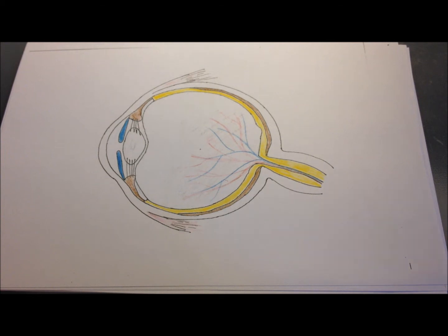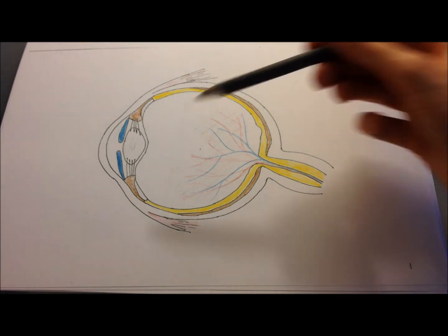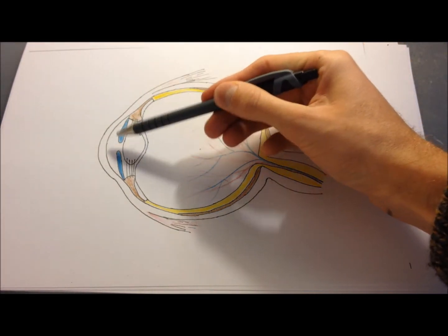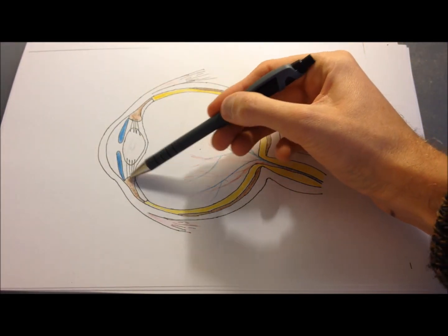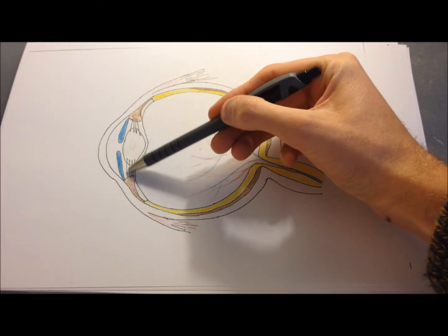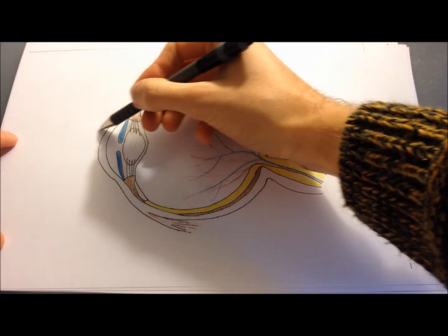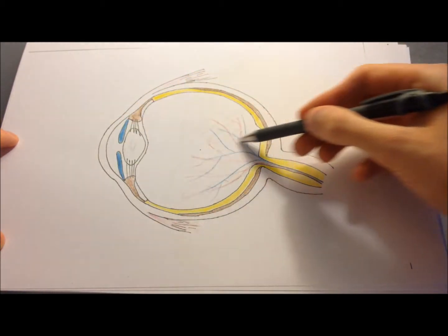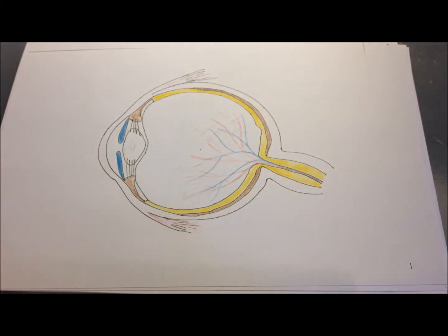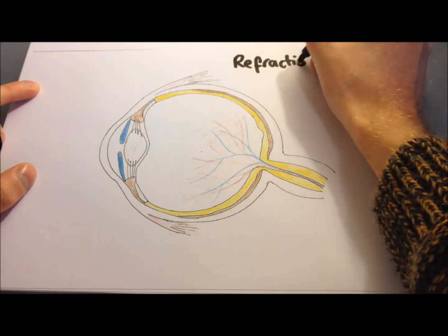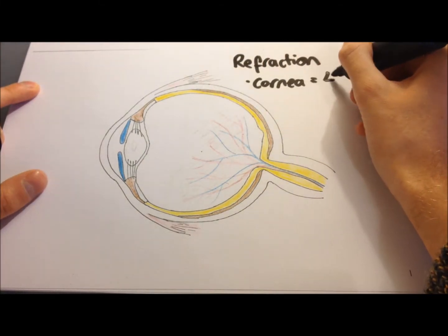Let's start looking at cataracts by examining the anatomy of a normal lens. This is a cross-section of the eye. In the anterior chamber we can see the lens, the iris sitting anterior to it, the ciliary body, and the zonular fibres which connect the lens to the ciliary muscle. The lens is a biconvex structure — like a 3D oval — but flatter anteriorly than posteriorly. It refracts light onto the retina, working alongside the cornea. The lens has a power of about 20 diopters and the cornea about 40 diopters, giving a total of 60 diopters for the whole eye.